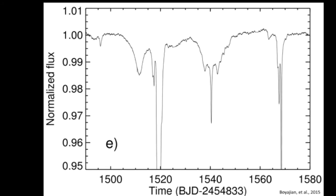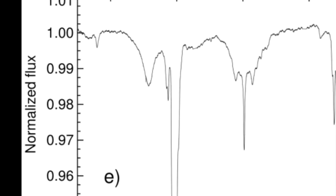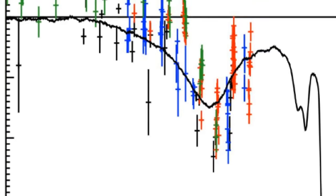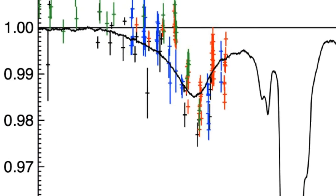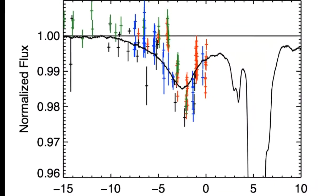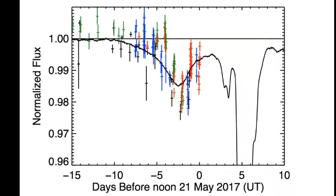There is an attempt to match the limited data collected so far from this latest dipping episode with the old Kepler data. This portion of the graph seems to be the best match. What you see here is a superposition of the new data over the Kepler data, and it seems to be a fairly good match.